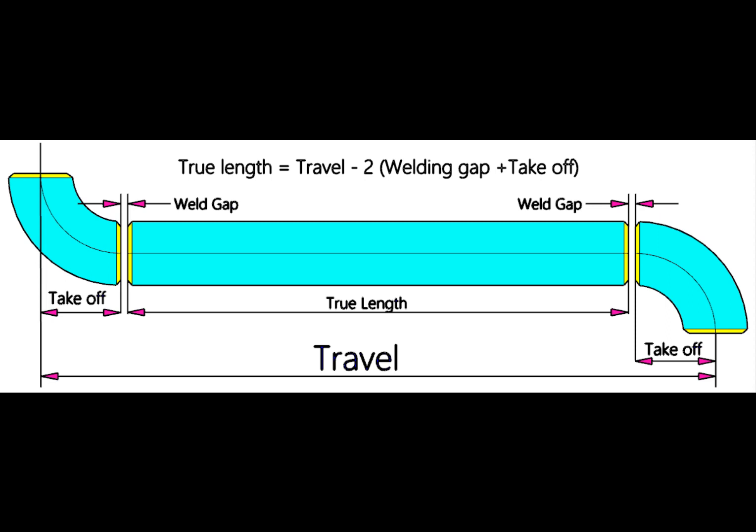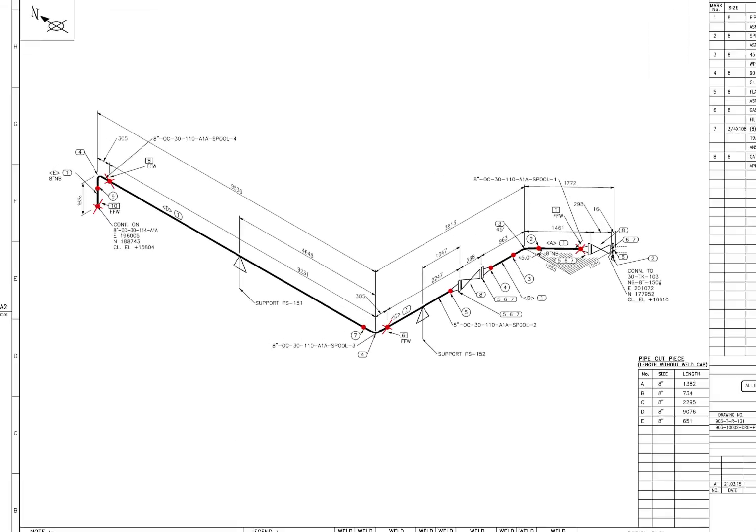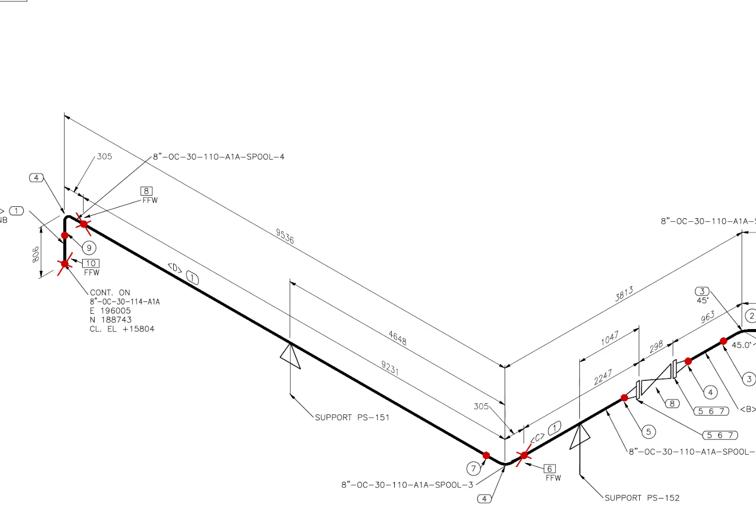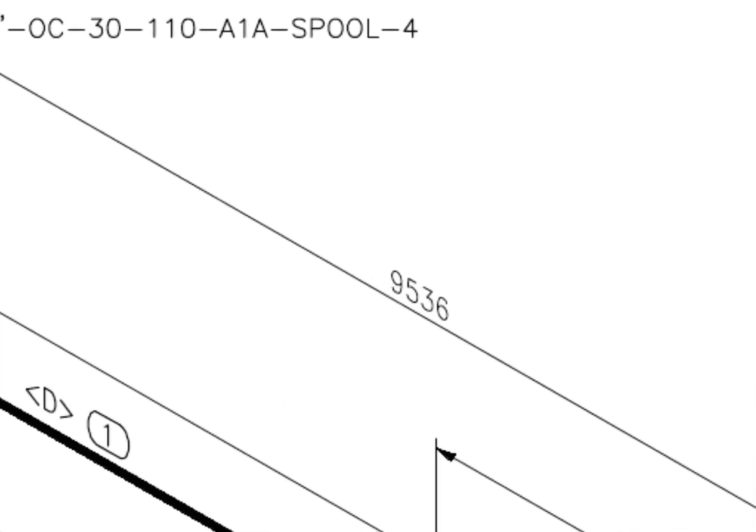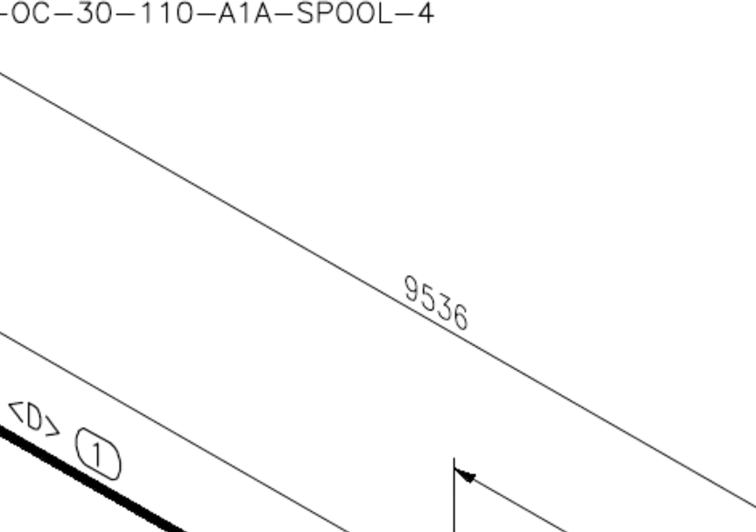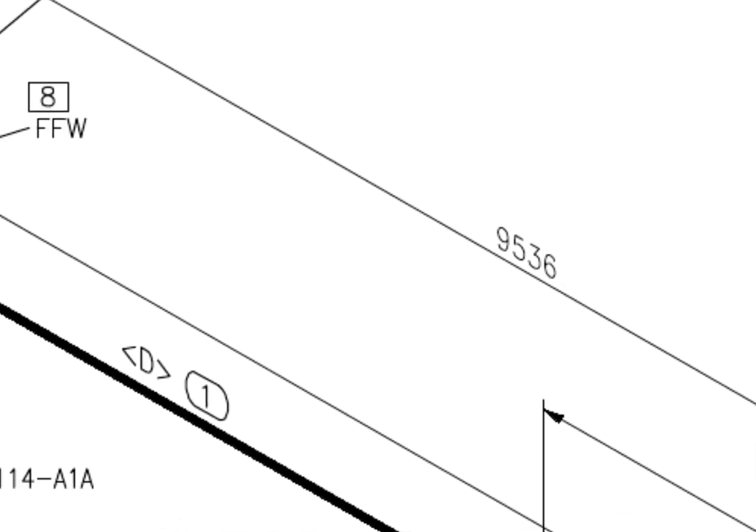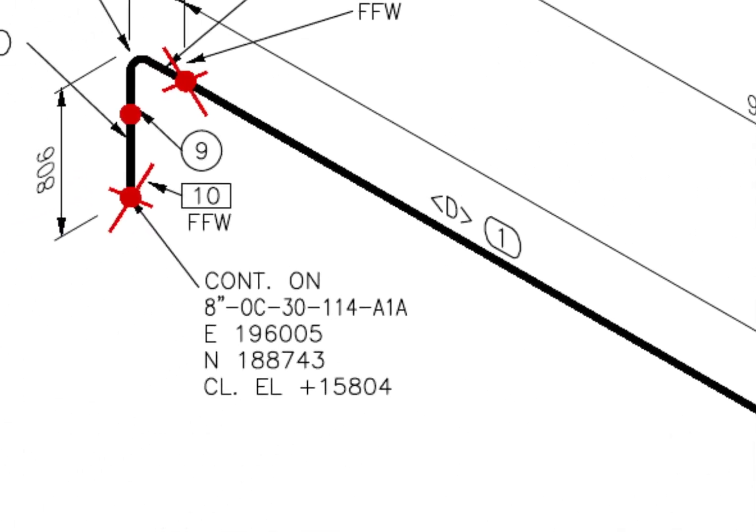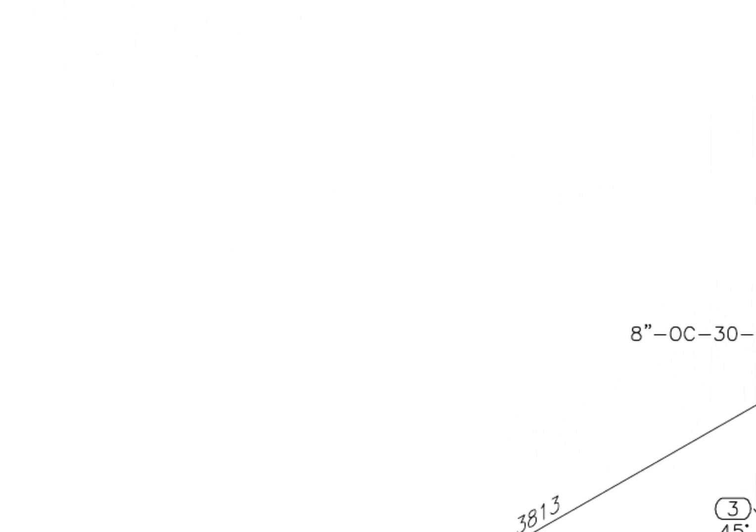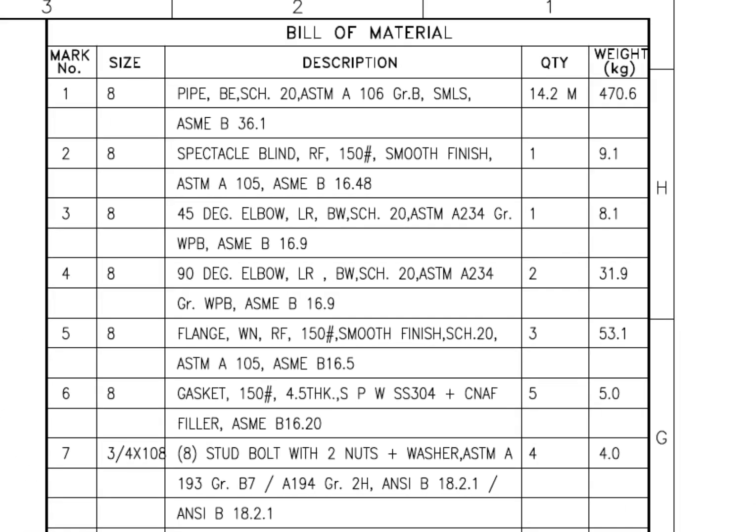Let us go to some examples. Here the travel length is 9536. Let us check the diameter of the pipe. What is the item number? Item number is 1. Go to the material list. Item number 1 is bevel end, schedule 20, seamless pipe.